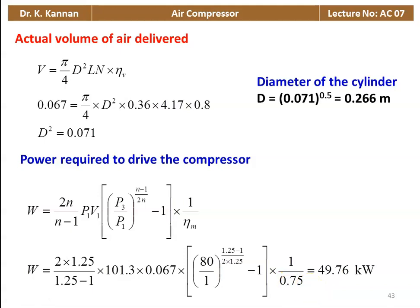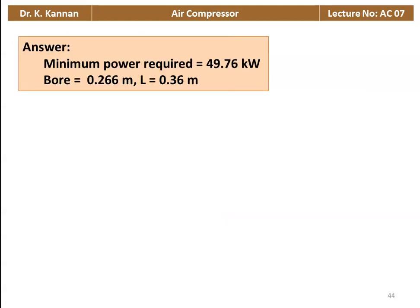So the power required to drive the two-stage compressor is 49.76 kilowatts. The answers to the problem: power required = 49.76 kW, bore diameter = 0.266 meters, stroke length = 0.36 meter.